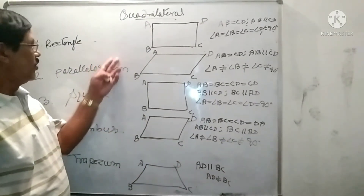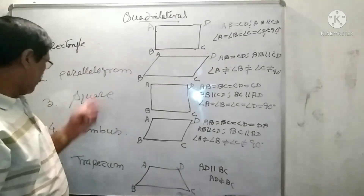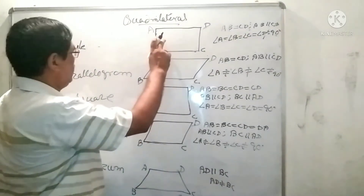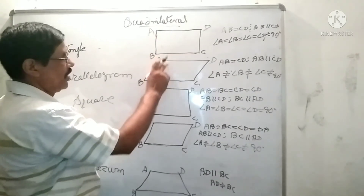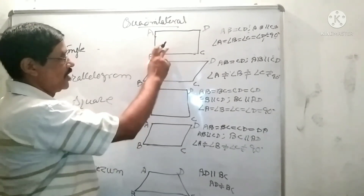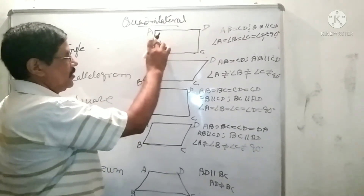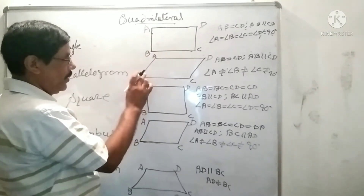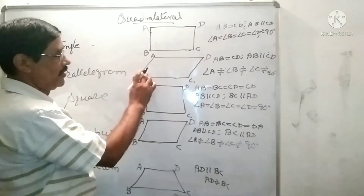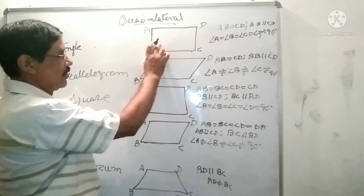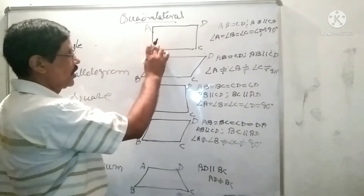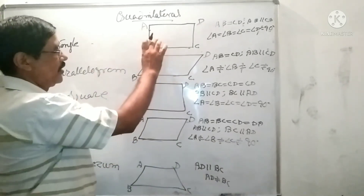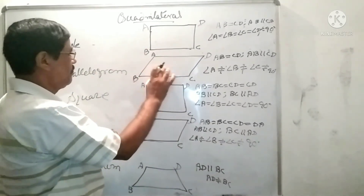Now the relationship between the four quadrilaterals. Rectangle and parallelogram — what is their difference? Their difference is the angles. If all four angles of a parallelogram are equal, then that will be a rectangle. On the other hand, if all four angles of a rectangle are not equal, then that rectangle is known as the parallelogram.